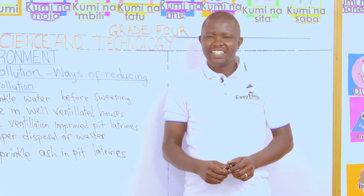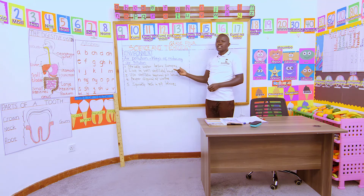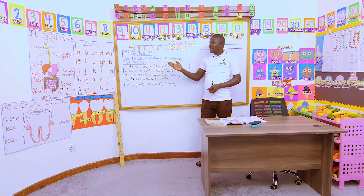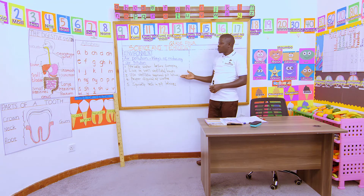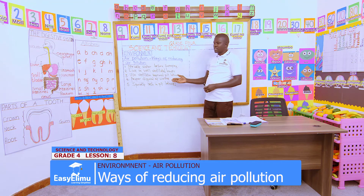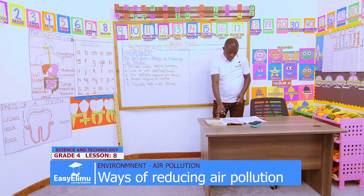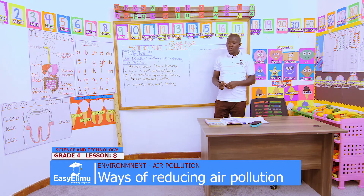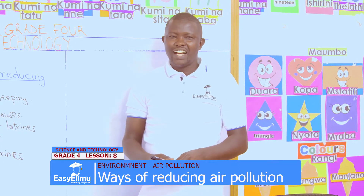Any questions, my learner, from what we have learned today? Ways of reducing air pollution: always sprinkle water on dusty places before sweeping; live in well-ventilated houses; use ventilation-improved pit latrines to make sure the foul smell is out; proper disposal of wastes; and sprinkle ash in pit latrines to reduce the smell, suppress foul odors, and kill any maggots that may accelerate decomposition.